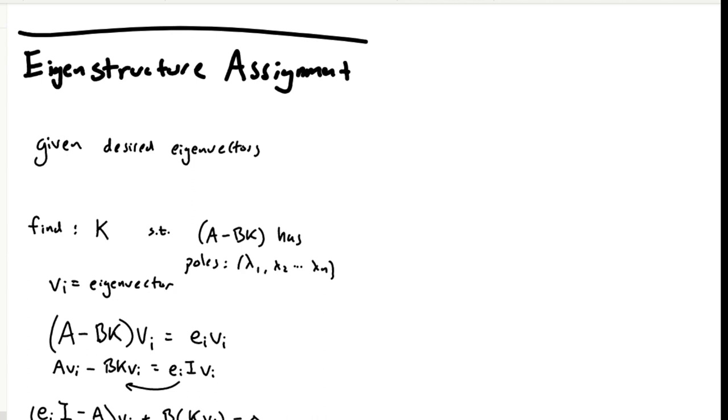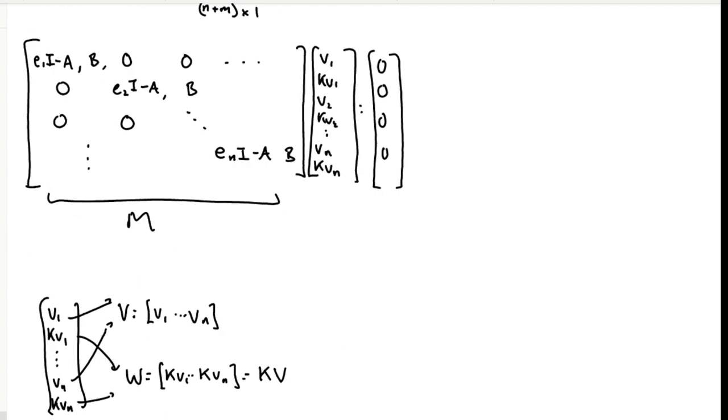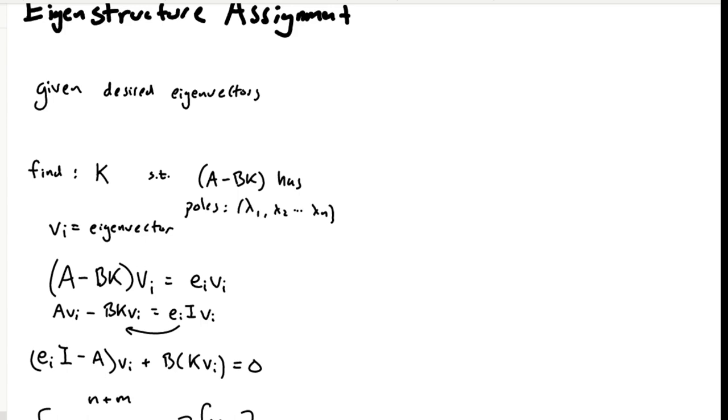LQR offers more control over how states will behave relative to each other. However, in LQR, we do not have any way to specify the eigenvalues, and thus we can't specify any specific damping characteristics.